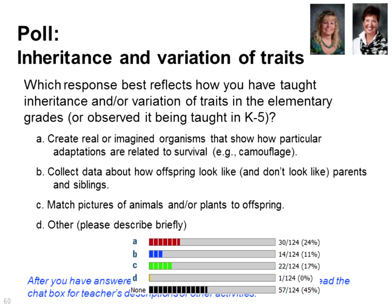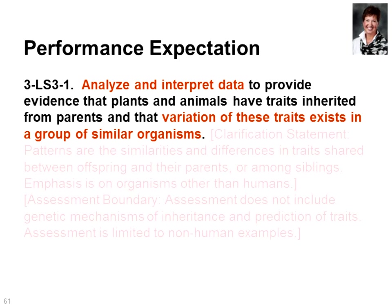The results show the majority around A and C — matching pictures to offspring and creating real and imagined organisms are very popular. Someone mentioned insects for variation of traits — you'll see some Madagascar hissing cockroaches tonight. Let's go ahead and move on. I just want to remind you of our performance expectation tonight with the focus on the practices of analyzing and interpreting data and the core disciplinary idea of variation of traits existing in a group of similar organisms.